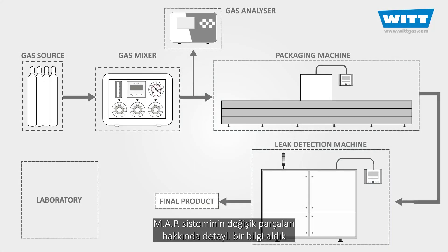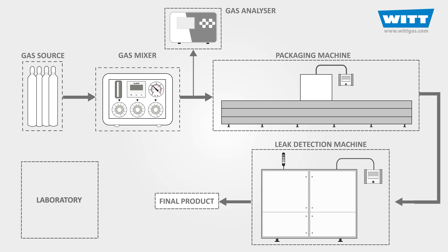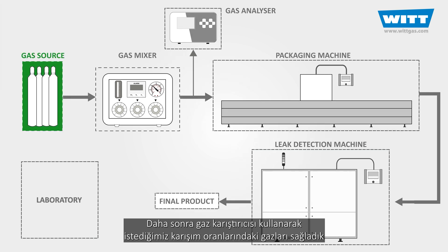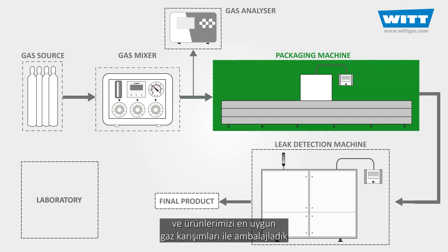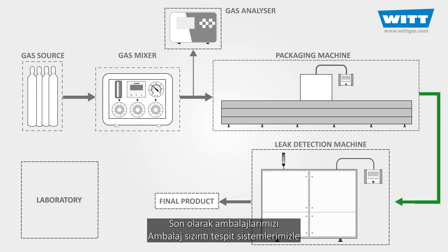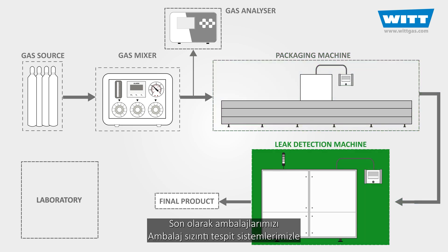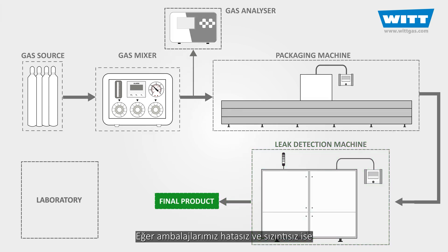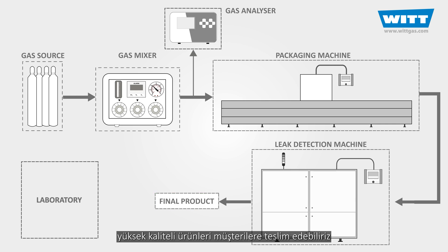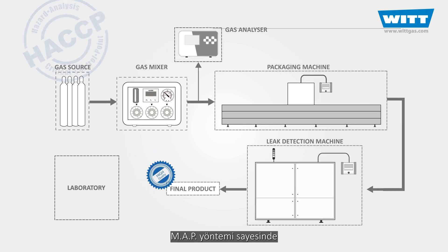In this video, we have gained a good understanding of the different elements of the MAP system. First, we started with the gas sources. Next, we made our desired gas mixture using the gas mixer, and then packed our product with the most suitable mixture of gases. Finally, we tested our package for any possible leakage with the leak detection machine. If our package is flawless and has no leaks, we can deliver top quality food products to customers, thanks to the MAP method.